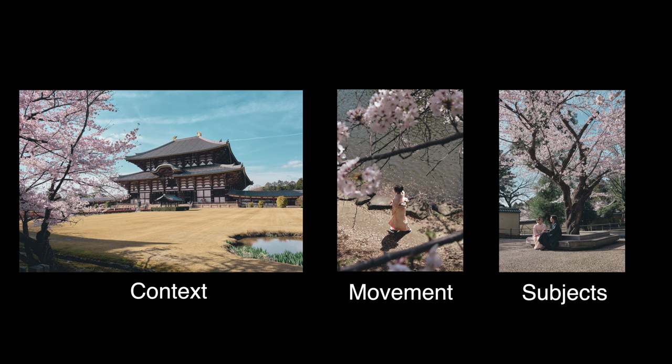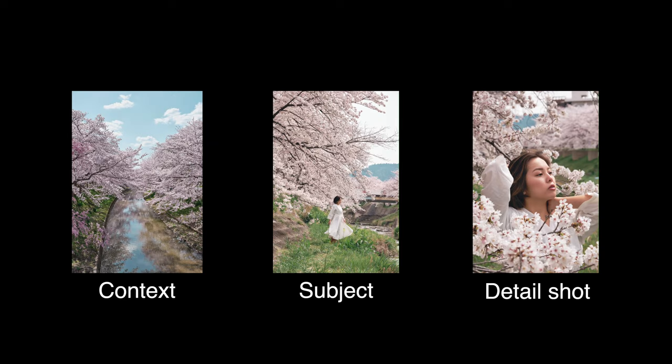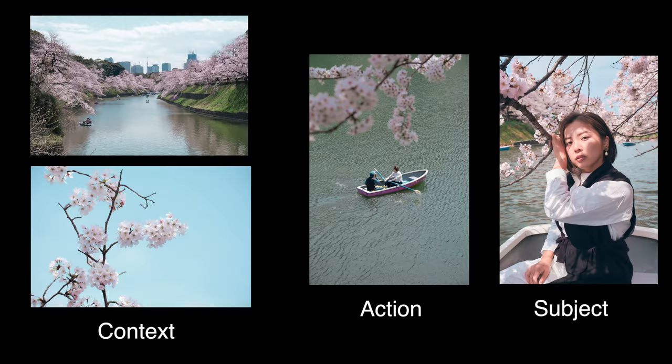Sometimes it can be really difficult to include context, a subject, and action within one single shot. So don't limit yourself to one single shot — it's okay to have several shots working with and complementing each other, instead of one shot where you try to scramble everything in. Take different shots that focus on different aspects of your story. You can think of every single image as a page of a book: each page gives different details, and all together they form the entire story.